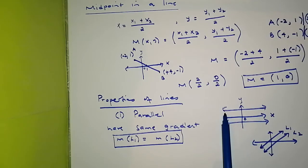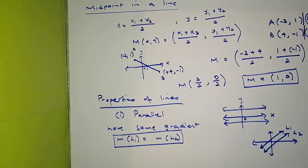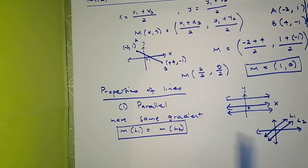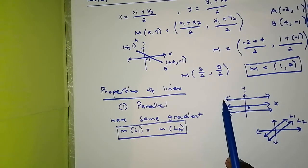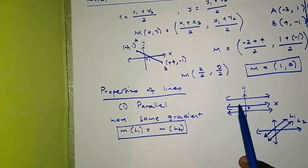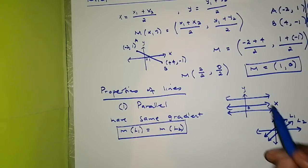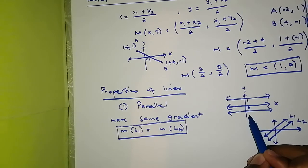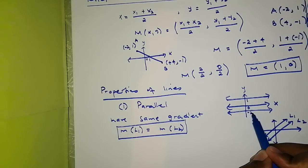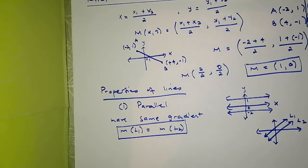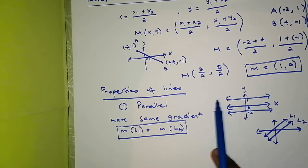This also applies to horizontal lines. As we've learned in previous videos, horizontal lines have a gradient of zero — whether y = 1 or y = −2, if a line is horizontal its gradient is zero. So parallel horizontal lines all share a gradient of zero.